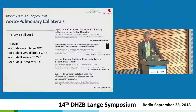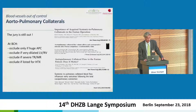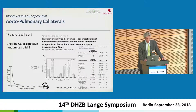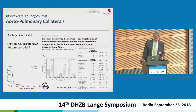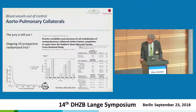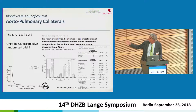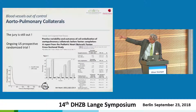At BCH, we only coil if there are huge aorto-pulmonary collaterals with a dilated left ventricle and significant AV valve regurgitation, and also in cases where we list patients for transplantation, as coiling may decrease post-operative bleeding risk. The jury is still out; there is an ongoing US prospective randomized trial. Looking at the data, there was really no difference in length of hospital stay between patients who had coiling or no coiling, and no significant difference between the coil versus no-coil groups. There's a distribution of about seven or eight US centers in terms of how many coil the collaterals before surgery.